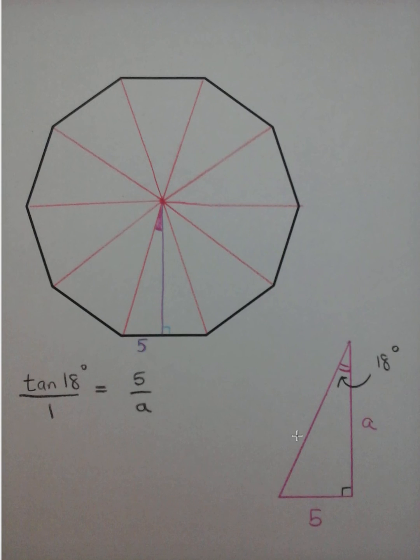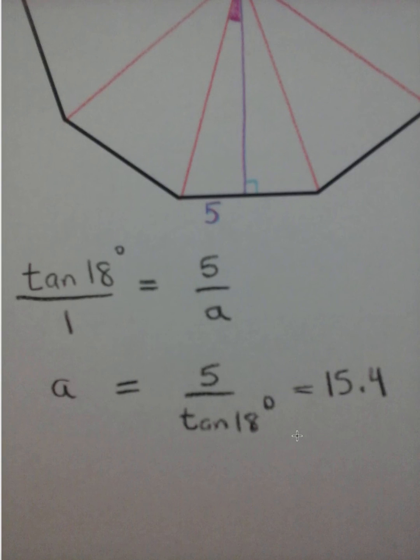So tangent of 18 over 1 equals 5 over a. Do a cross multiplication. Bring the a up to the left-hand side and bring the tangent 18 down to the right-hand side. This solves for the apothem. Round to the nearest tenth, 15.4 centimeters is the apothem.